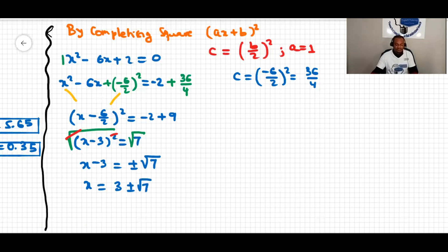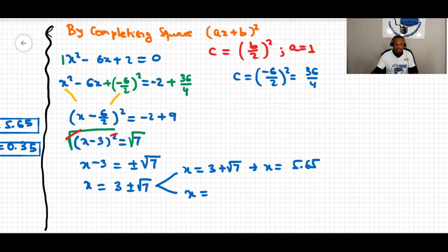Moving negative 3 over gives x equal to 3 plus or minus root 7 — the same answer we got previously. So x equals 3 plus root 7, which is 5.65 to the second decimal place, and x equals 3 minus root 7, which is 0.35 to the second decimal place. Thank you.